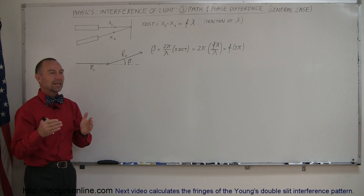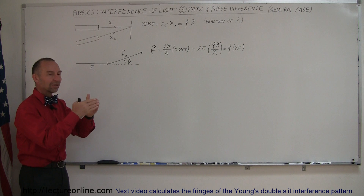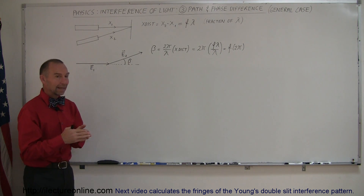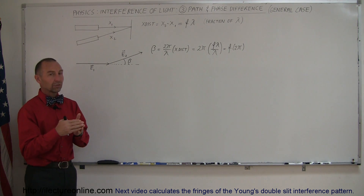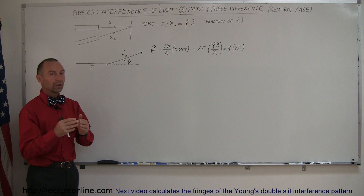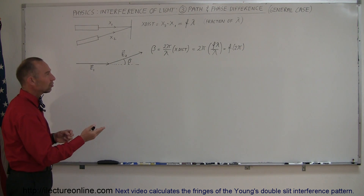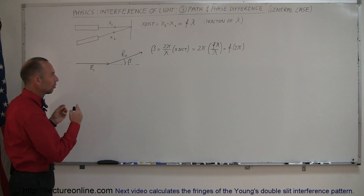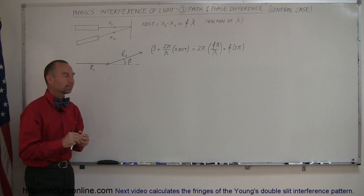So what happens when the light comes together at that point? There's going to be interference — either constructive, destructive, or some combination of the two. In other words, it could be neither completely destructive nor completely constructive. In the general case, we assume it's somewhere in between.